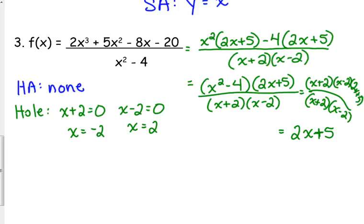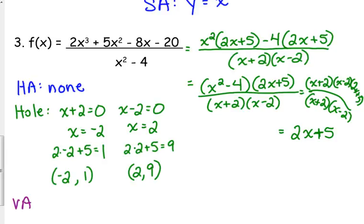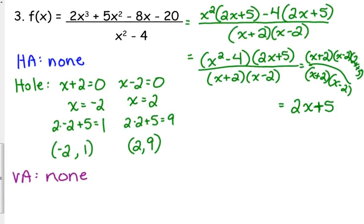What else do we have to do with our holes? We've got to plug it back in. We've got to plug it into the simplified version to find their y coordinates. So, this one would be positive 1. The other one would be 9. So, we have holes at negative 2, positive 1, and at positive 2, 9. Do we have a vertical asymptote? Do we have a denominator left? No. No vertical asymptotes because our simplified version is just 2x plus 5.